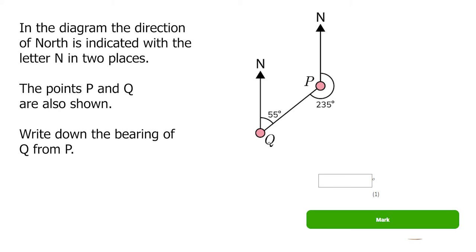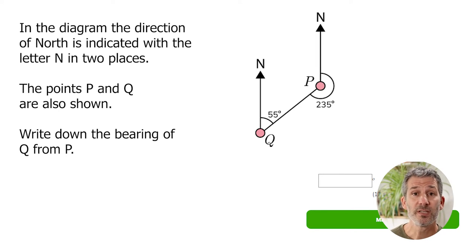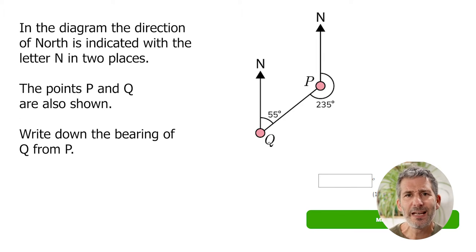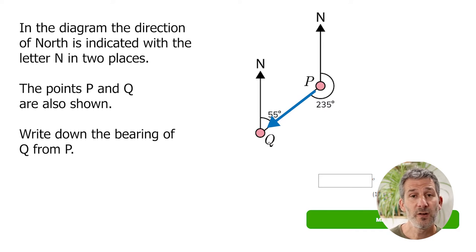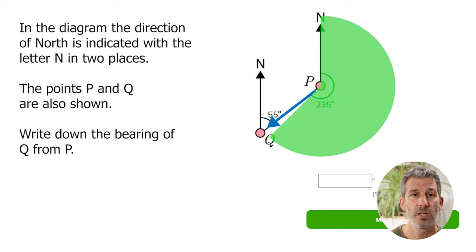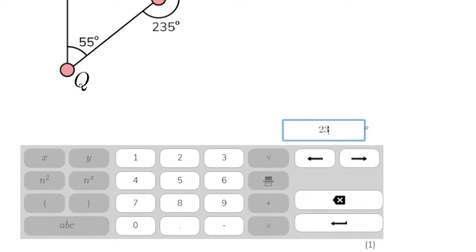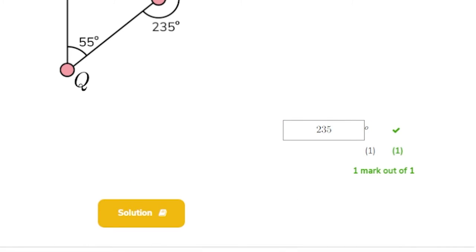In the diagram below, the direction of north is indicated with the letter N. The points P and Q are shown and we're asked to write down the bearing of Q from P. We're given the angles — either 55 or 235 — and just need to work out which is correct. I focus on the 'from' part: we're coming from P and want to head to point Q. Standing at point P facing north, what angle do I need to turn through clockwise to be pointing towards Q? It's that one there — 235 degrees. That's your answer.